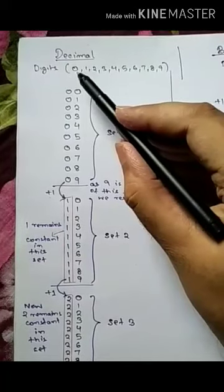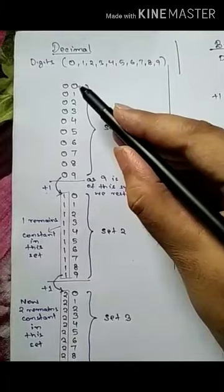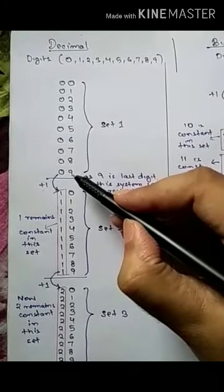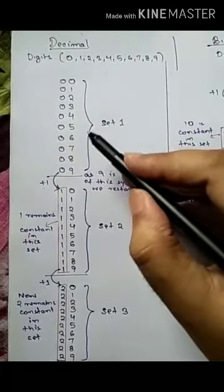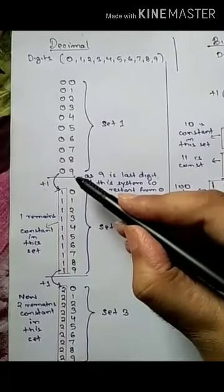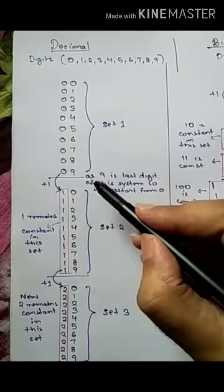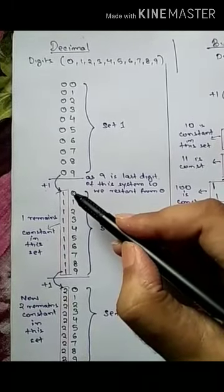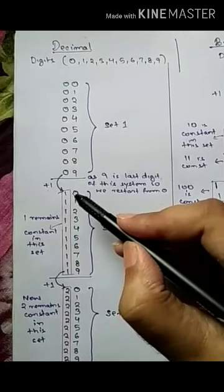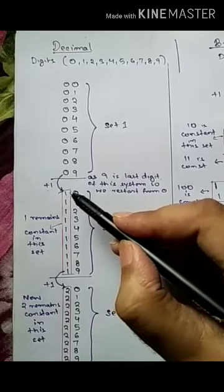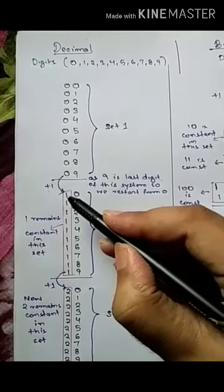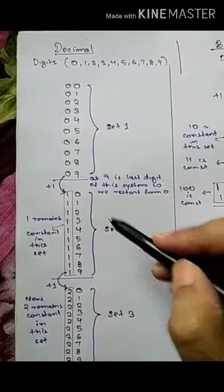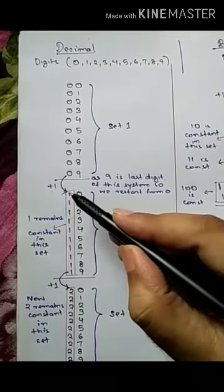There are 10 digits in the decimal system: 0 to 9. We write the numbers from 0 to 9 at the units place — it forms one set. After 9, since 9 is the last digit of this system, we restart again from 0, but a 1 is added to the just-left position, so it becomes 10. This 1 remains constant throughout that set.